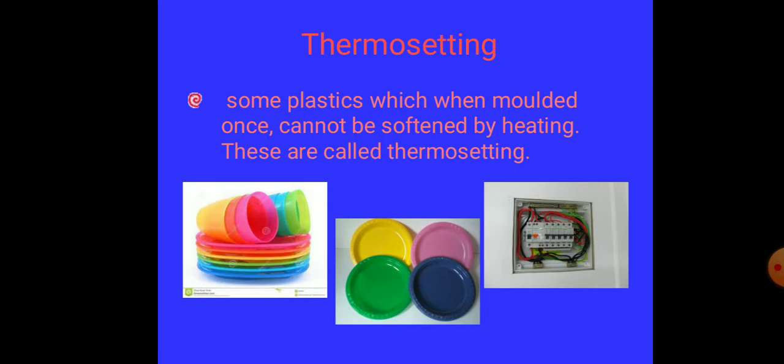Let's talk about thermosetting plastics. You might have seen switch sockets and your utensils, microwave utensils, melamine, bakelite. These all are thermosetting plastics. They do not get deformed by heat and they are very rigid.